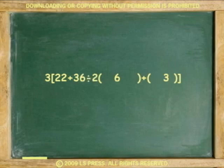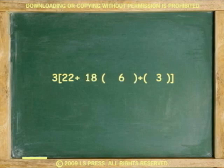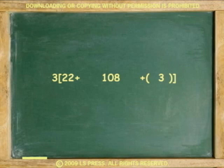Divide 36 by 2 to get 18, and multiply 18 by 6 to get 108. Next, do addition inside the parentheses. 22 plus 108 plus 3, and get 133.